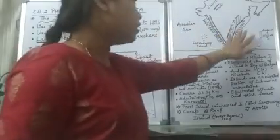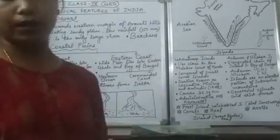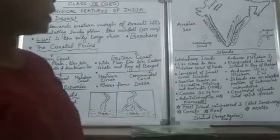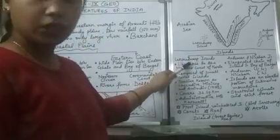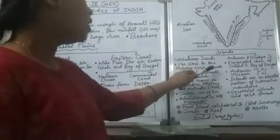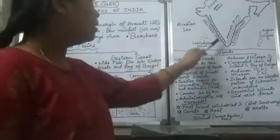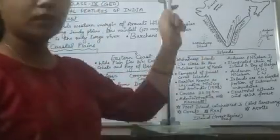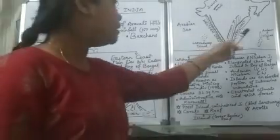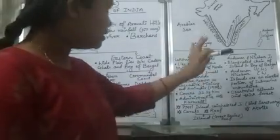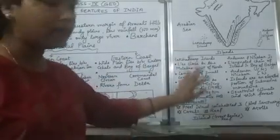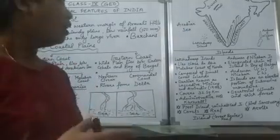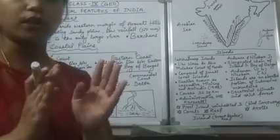Now we'll start the topic of islands. We have the mainland in our country, and apart from the mainland we also have two island groups which are part of our country — the Lakshadweep islands and the Andaman and Nicobar islands. The Lakshadweep islands lie close to the Malabar coast of Kerala.